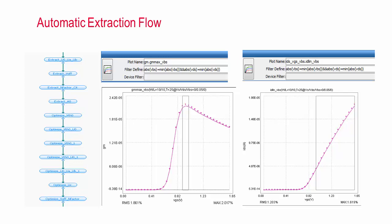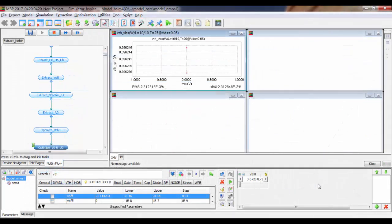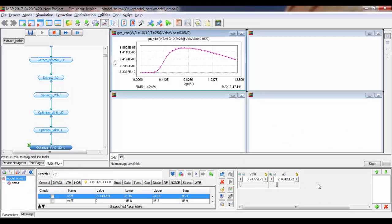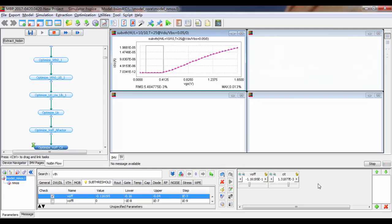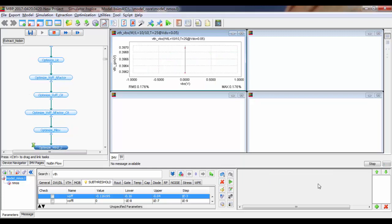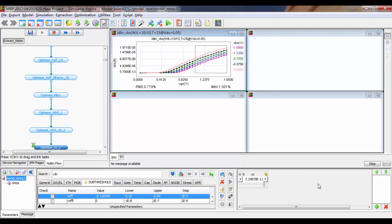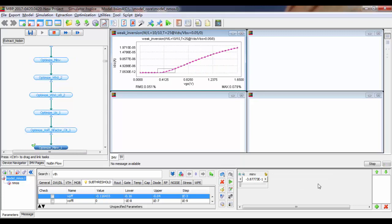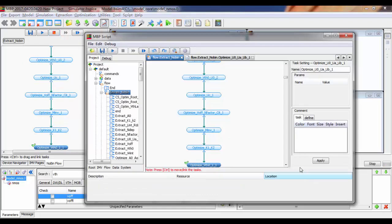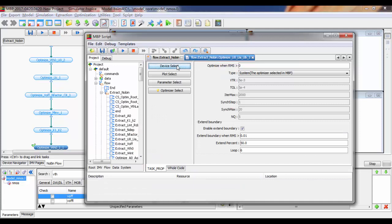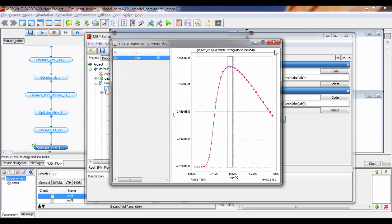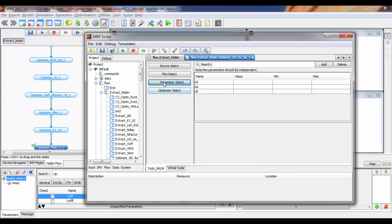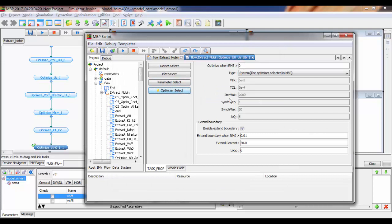For a complex model such as BSIM4, it's easy to become overwhelmed by the large number of parameters and knowing where to model first. For beginners, I would suggest to run the automatic extraction flow first. This saves a lot of time in generating good models with reasonable accuracy. From a high-level perspective, you may customize the flow or run just a portion of the whole flow. For example, model parameter extraction only. In each step, we define a data region of interest, choose an optimizer, select model parameters and plots to be optimized.